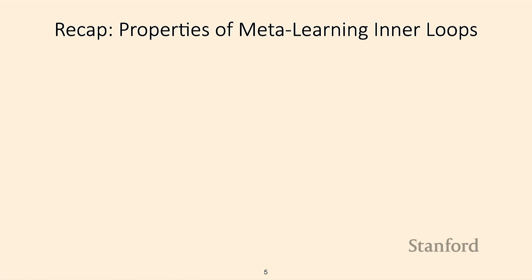Let's start with a recap of some things we've seen so far, both in terms of meta-learning algorithms and also casting that in the context of Bayesian graphical models. When we covered the last lecture on meta-learning algorithms, we talked about the properties we might want from a meta-learning algorithm.